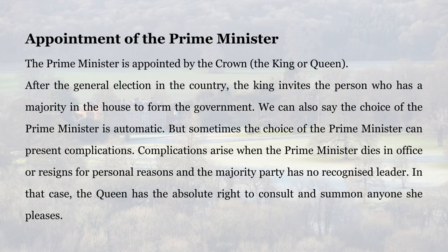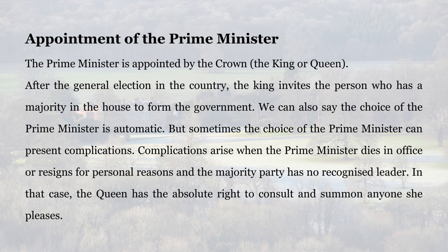Appointment of the Prime Minister: The Prime Minister is appointed by the Crown, the King or Queen. After the general election in the country, the King invites the person who has a majority in the House to form the government. We can also say the choice of the Prime Minister is automatic. But sometimes the choice can present complications — such as when the Prime Minister dies in office or resigns for personal reasons and the majority party has no recognized leader. In that case, the Queen has the absolute right to consult and summon anyone she pleases.